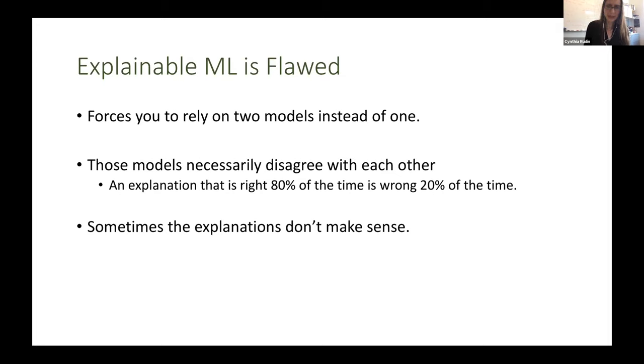Also, the explanations sometimes are not consistent. So for instance, the black box could say it denied my credit because I didn't have a very long credit history. But maybe I could point to somebody over there who had exactly the same length of credit history as me, and that guy did get the loan or something like that.